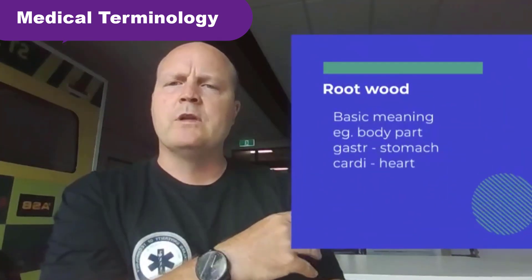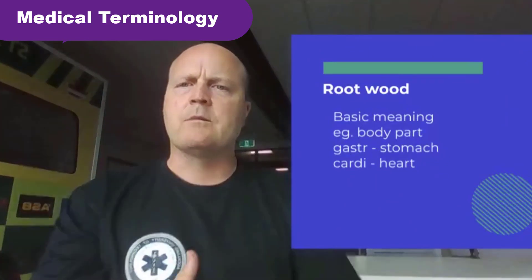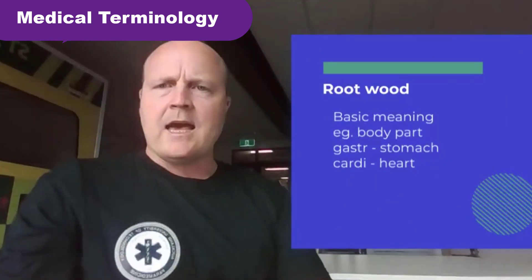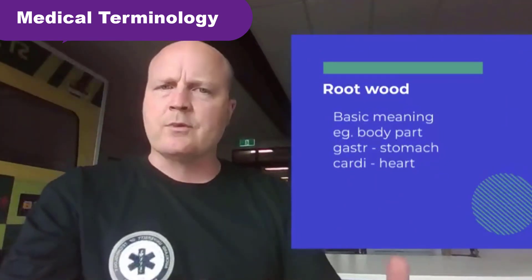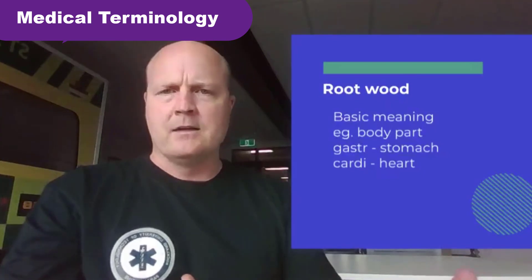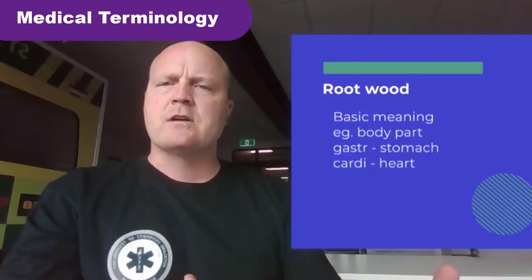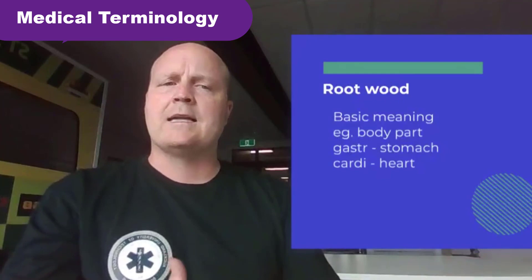The first bit of a word is a root word — this is the basic meaning of a word, and it could be a body part. For example, every time we see 'gastric' it means stomach, or 'cardi' means heart. So a cardiac arrest is something to do with the heart, and gastric bypass surgery is stomach surgery to help someone lose weight.